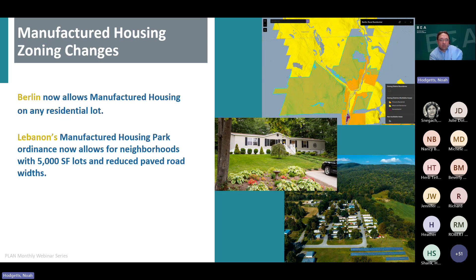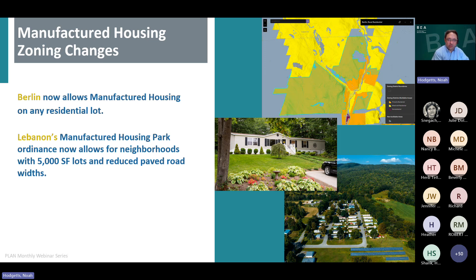For manufactured housing in 2023: Berlin amended their zoning ordinance to allow manufactured housing on any lot that allows single-family dwellings, including in the rural residential district. Lebanon reduced the minimum lot size to 5,000 square feet in manufactured housing parks, and reduced the buffer including required paved road widths for manufactured housing parks. There's a lot of really interesting changes — this is just a very small sample of the changes you would see captured in the list of zoning amendment changes noted earlier.